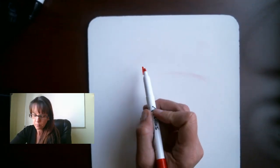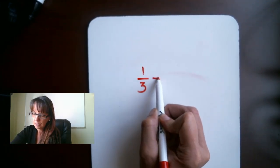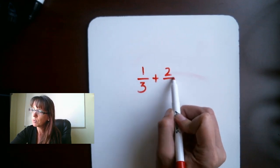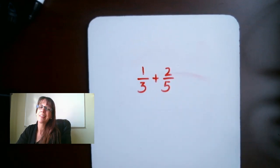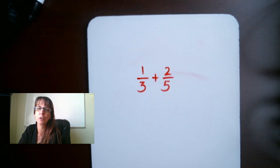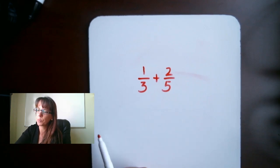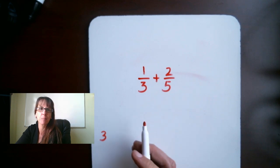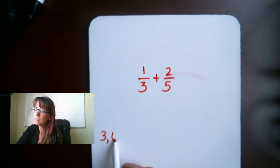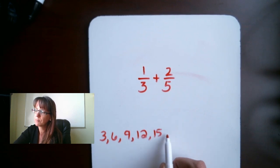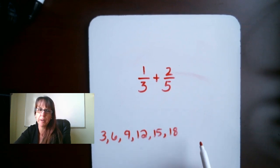We have 1 over 3 plus 2 over 5. This is where it's really helpful to know your least common multiples. Least common multiples for 3, just think of it like counting by 3s: 3, 6, 9, 12, 15, 18, so on and so forth.